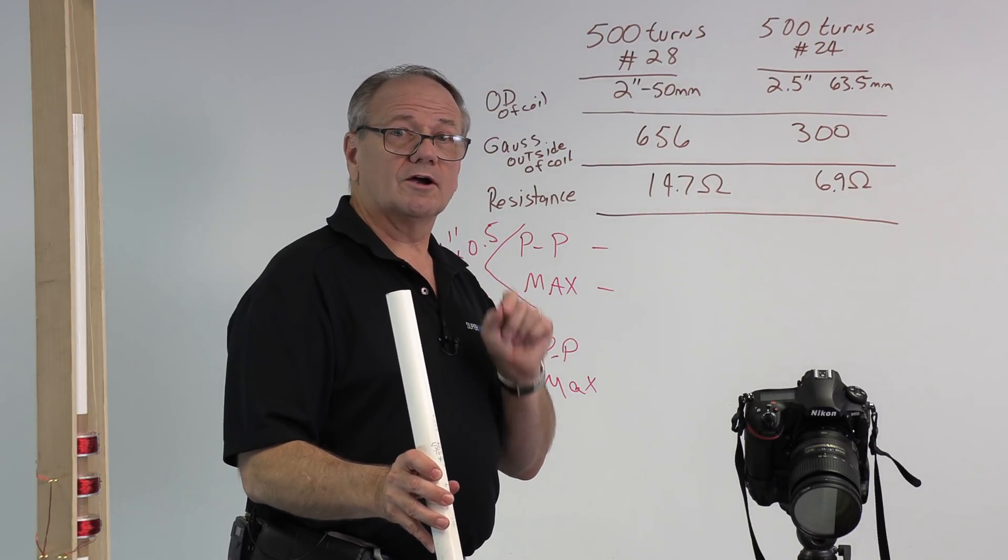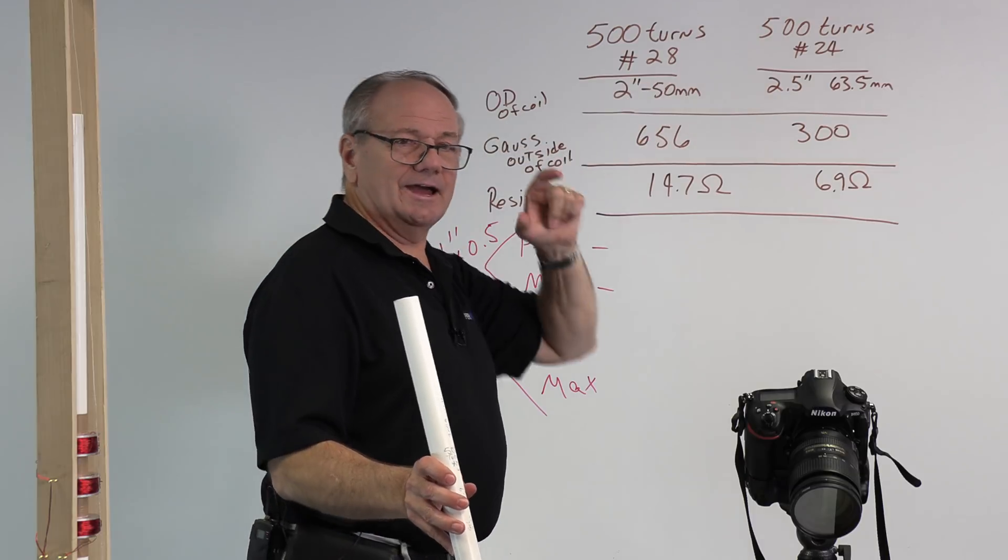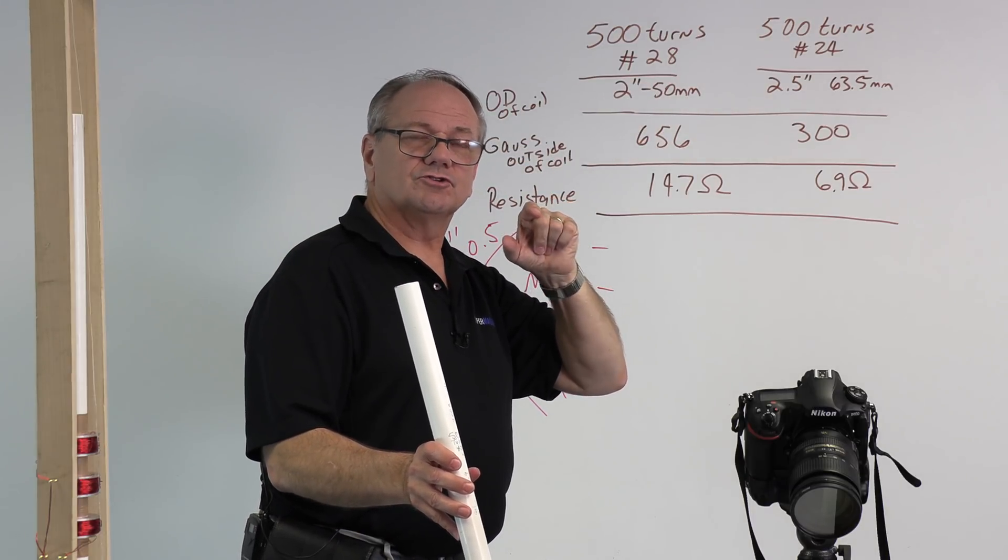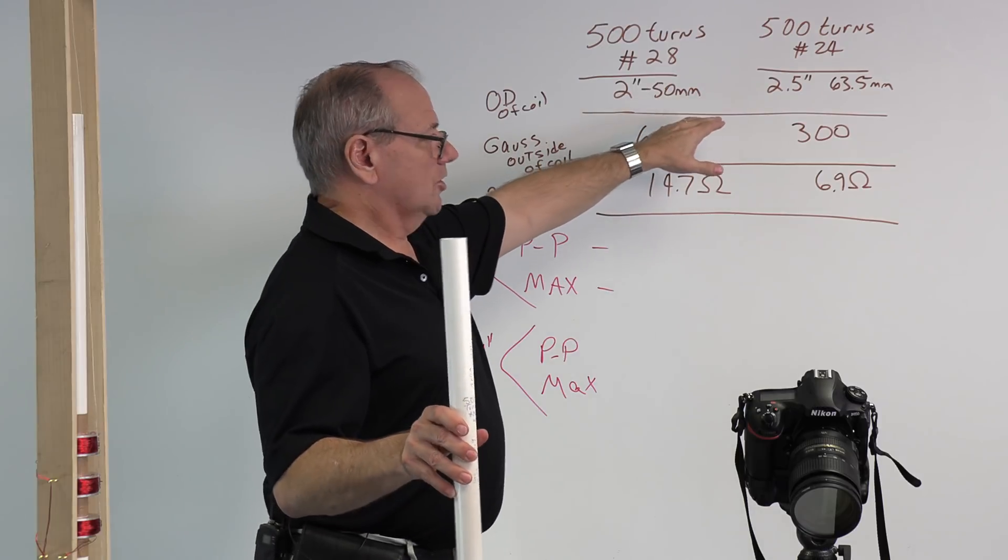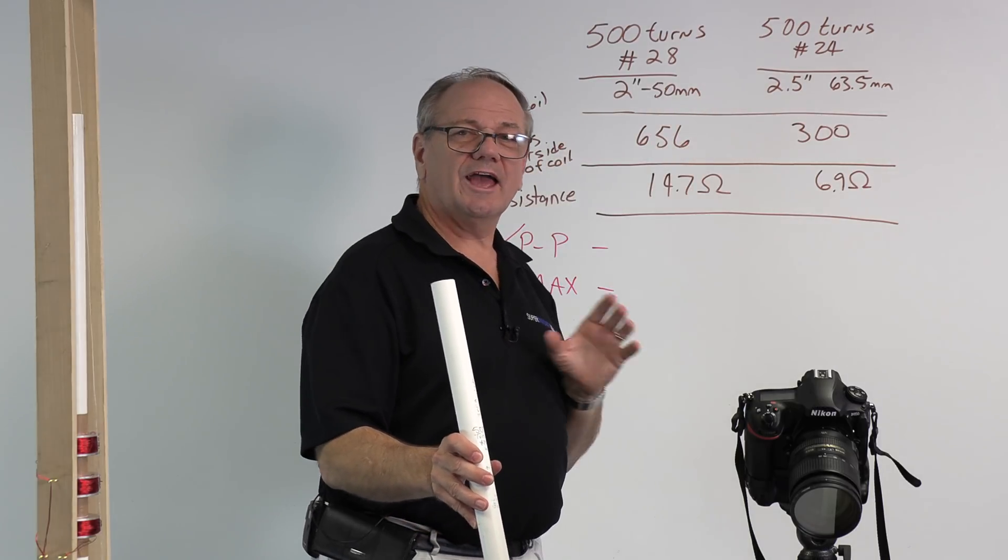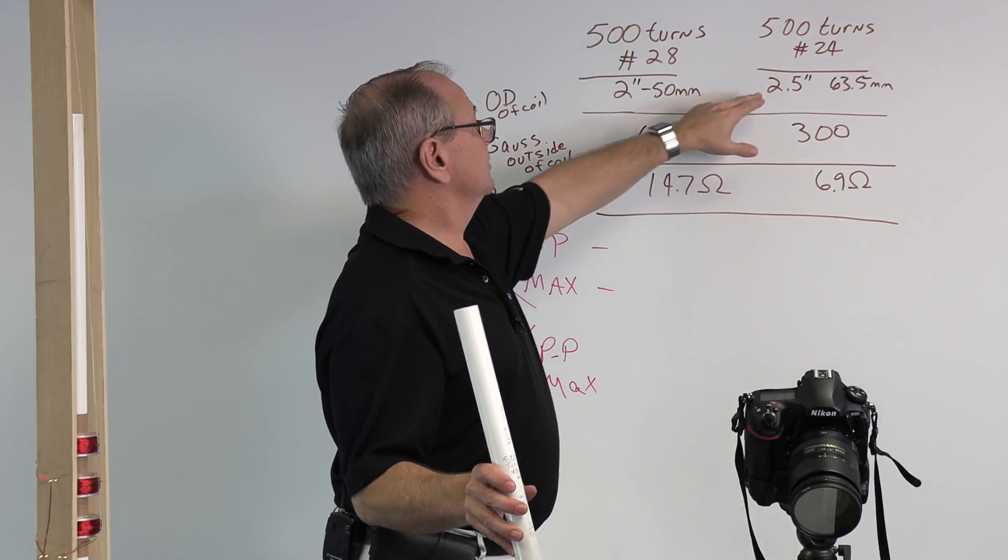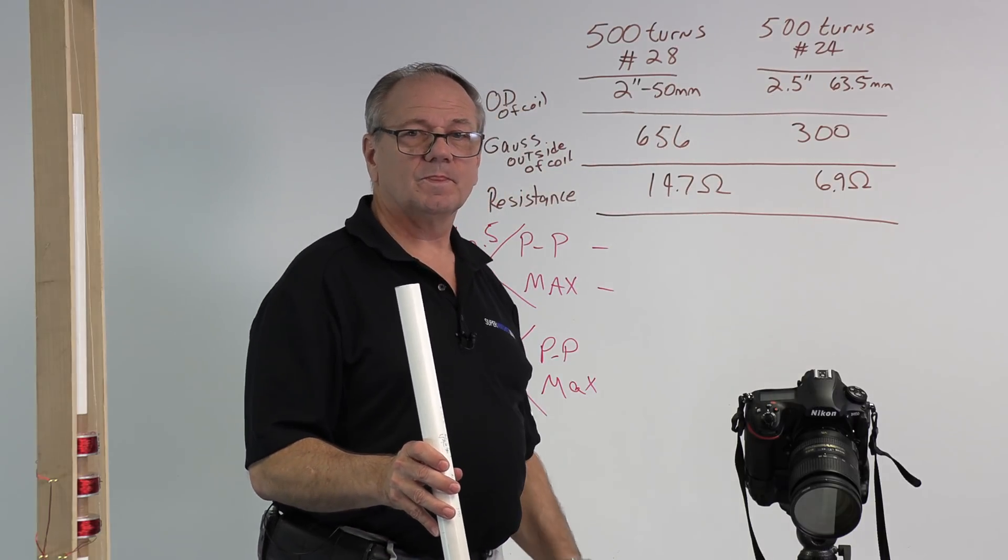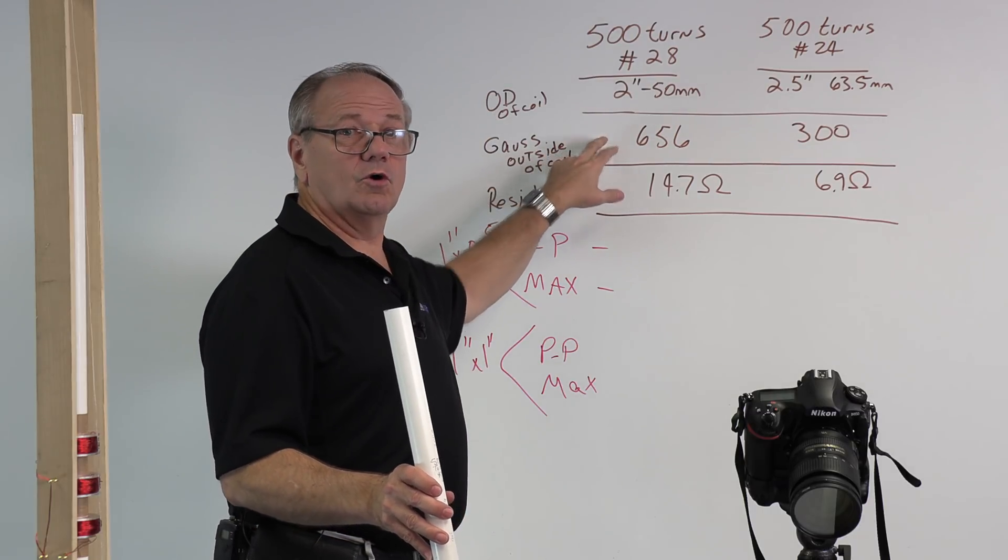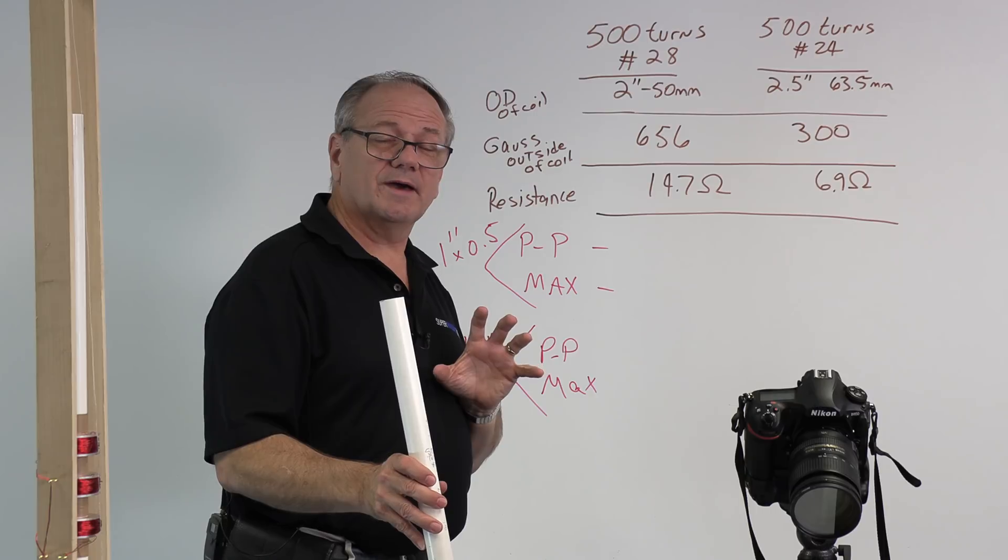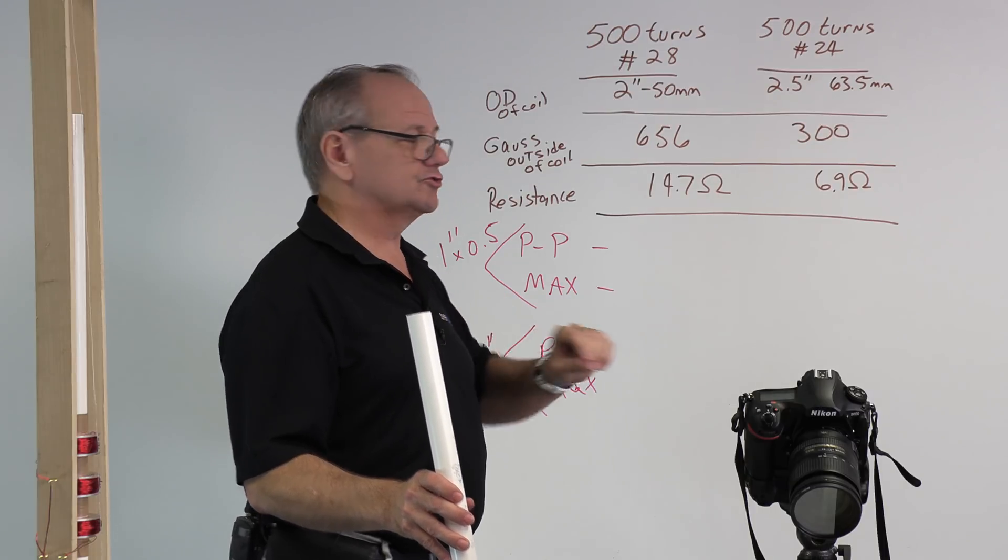Using the smaller wire, the 28 gauge wire, I am able to get this outside diameter of the wire down to two inches, which is 50 millimeters. On the larger wire, it takes two and a half inch outside diameter in order to get this many turns, and that's 63 and a half millimeters. The next parameter we look at is the gauss outside of that coil. This is where the big impact is.